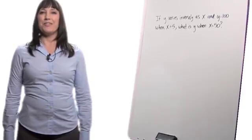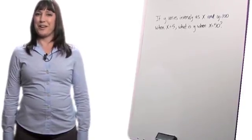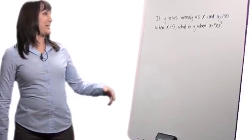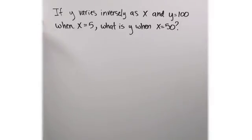Let's look at a problem involving inverse or indirect variation. It reads, if y varies inversely as x, and y equals 100 when x equals 5, what is y when x equals 50?